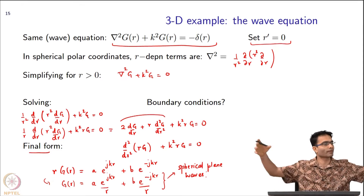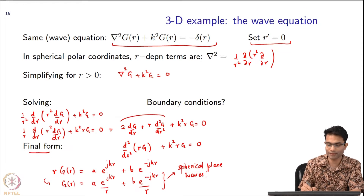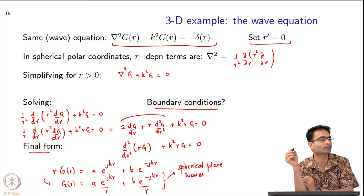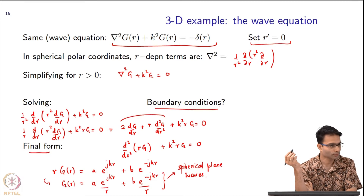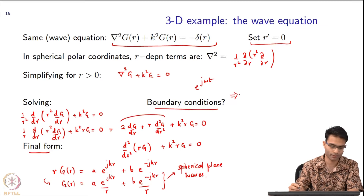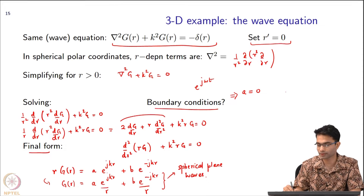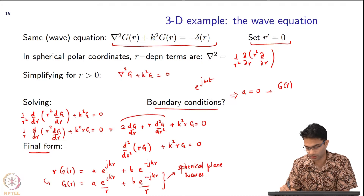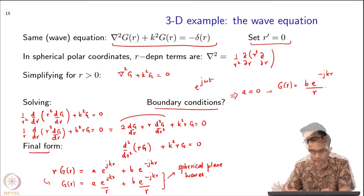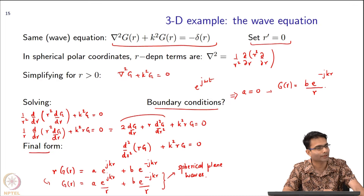We can eliminate at least one term using boundary conditions. The trick is the time convention: our convention is e^(+jωt). The A·e^(+jkr)/r term corresponds to an incoming wave, so A equals zero. The final form is g(r) = B · e^(−jkr) / r. What remains is to find the constant B — and by now we know the game.